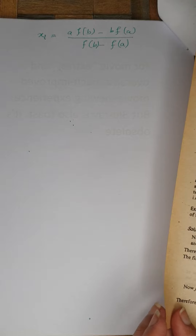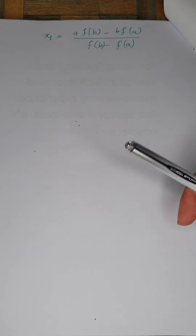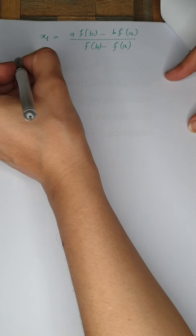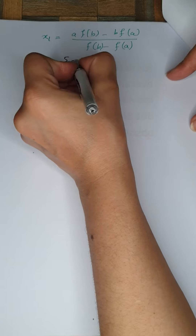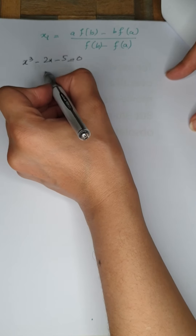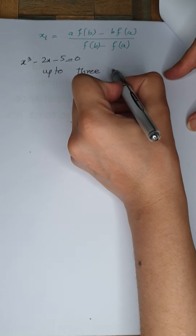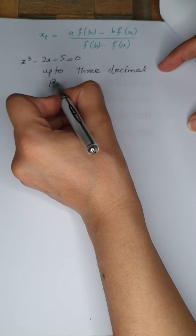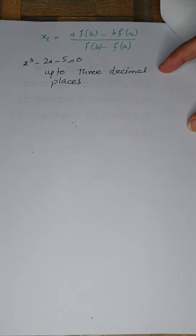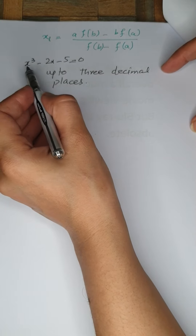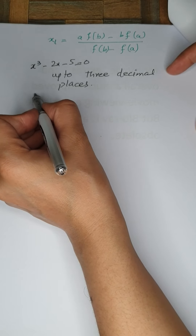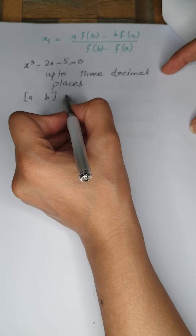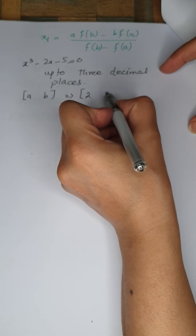So the formula for the Method of False Position is: x_i = (a·f(b) − b·f(a)) / (f(b) − f(a)). This is the formula we will use to calculate or approximate our root. Let's apply it to an example: find the real root of x³ − 2x − 5 = 0, correct to three decimal places.